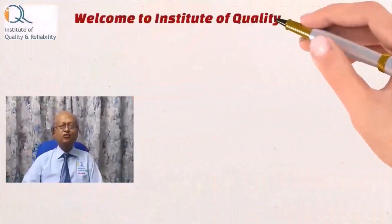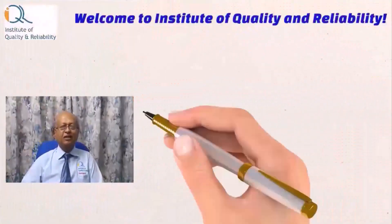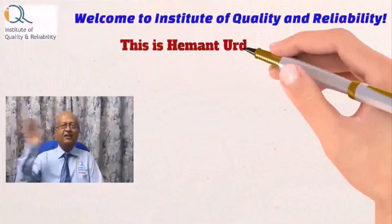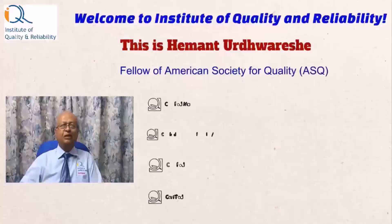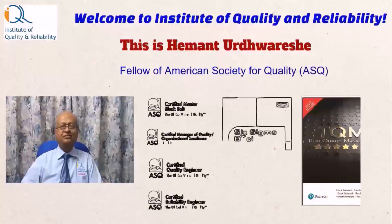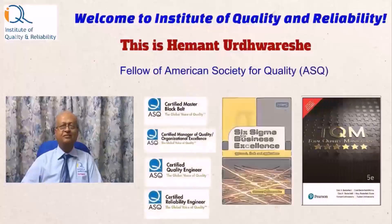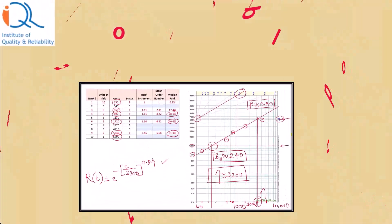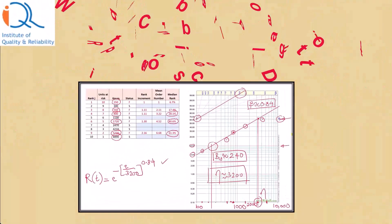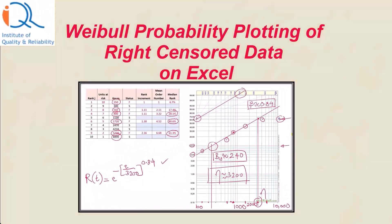Welcome to Institute of Quality and Reliability. Hi, this is Heyman. Weibull Probability Plotting of Right Censored Data on Microsoft Excel.